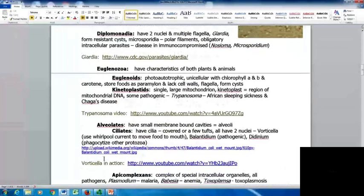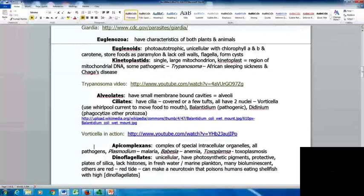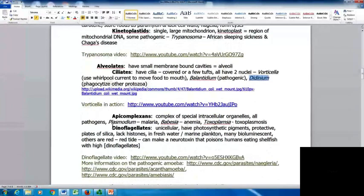The alveolates have small membrane-bound cavities called alveoli. It includes the ciliates which have cilia, covered or in a few tufts. All have two nuclei. One example is Vorticella that uses a whirlpool current to move food towards its mouth. Balantidium coli is pathogenic. The Didinium can phagocytize other protozoa. Here's a video clip showing Vorticella in action.